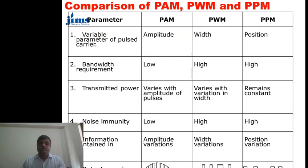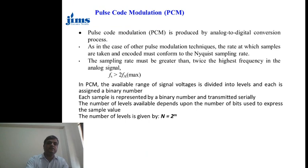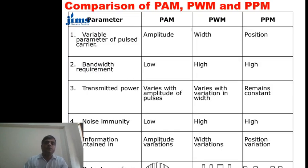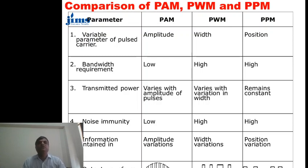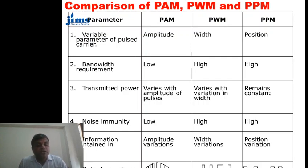These are basically the variations and comparisons among PAM, PWM, and PPM. In this lecture we studied pulse amplitude modulation, pulse position modulation, and pulse width modulation — their advantages, disadvantages, and applications. In the next class we are going to discuss pulse code modulation. Thanks for your attention.